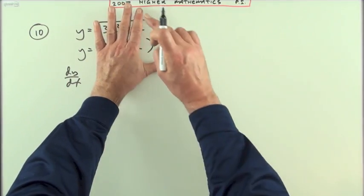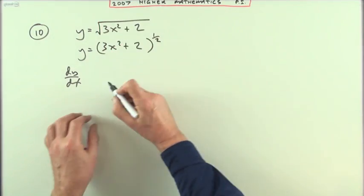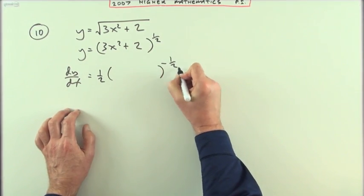The outer layer, if it was x to the power of half, you multiply by the power and take one off the power, negative a half.